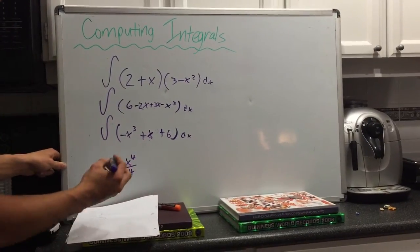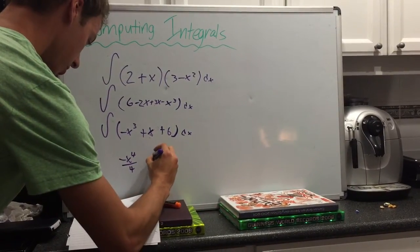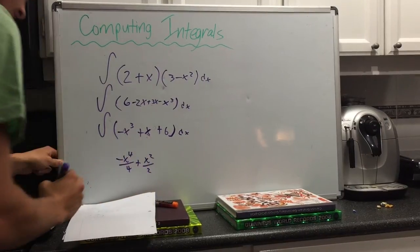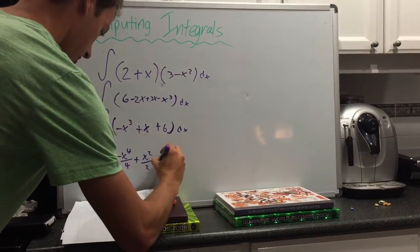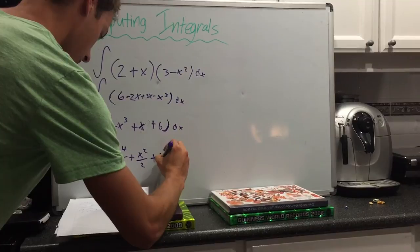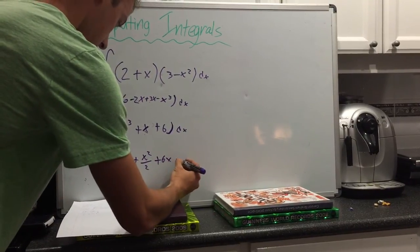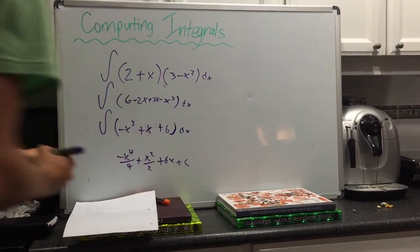x becomes x squared over 2, and 6 becomes 6x. We'll tack on plus c. And that's it.